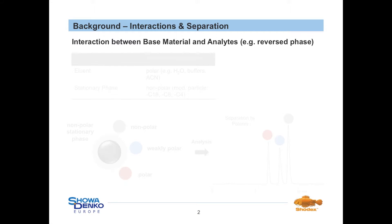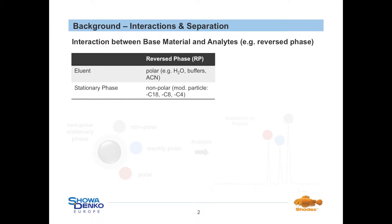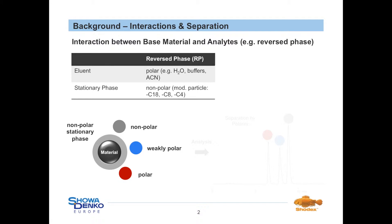In contrast to normal phase chromatography, reversed-phase chromatography is performed by using a polar aqueous mobile phase, i.e. mixtures of pure water or buffers and polar organic solvents, for example acetonitrile, methanol etc., and a non-polar stationary phase. This combination of chromatographic conditions leads to a separation of small organic compounds like drugs by their polarity.